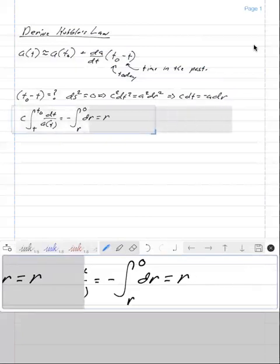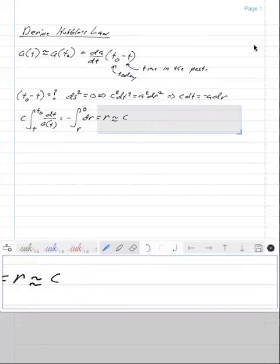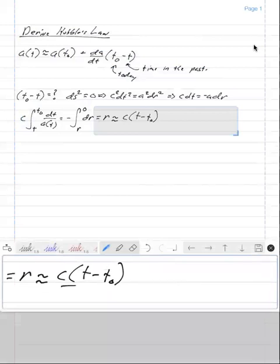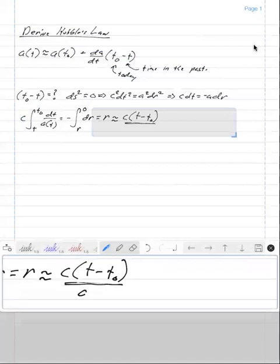Once again, we're taking the approximation that we're looking at relatively recent times. So this integral on the left-hand side of time is approximately equal to c times T naught minus T divided by a of T naught.